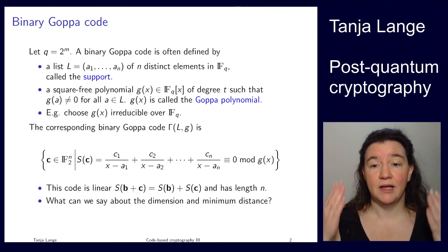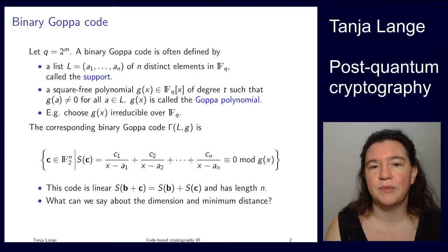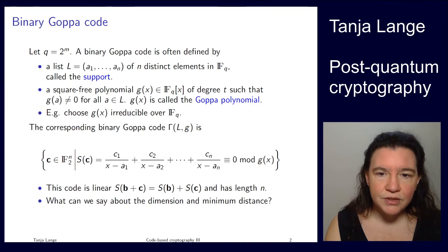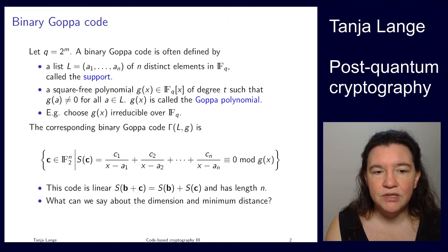Well and here's the code. This set here, this is the set of valid code words. So the binary Goppa code is typically noted by gamma of the support and the Goppa polynomial, so gamma of L, g, is given by the set of, and now note, this is F2. So this is not F2 to the m. So the entries of the code word c are just zeros or ones.